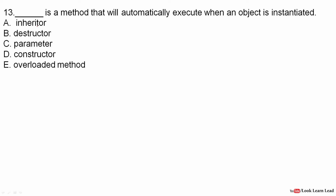Next question: Dash is the method that will automatically execute when an object is instantiated. A method here refers to a function, and the answer is a constructor. Whenever we instantiate an object of a class, the constructor is automatically invoked. A destructor is used when we want to release memory. Parameters are values passed to functions. Overloaded methods have different types of arguments but perform the same function. The method executed when an object is destroyed is a destructor. This question is from Java or C++.